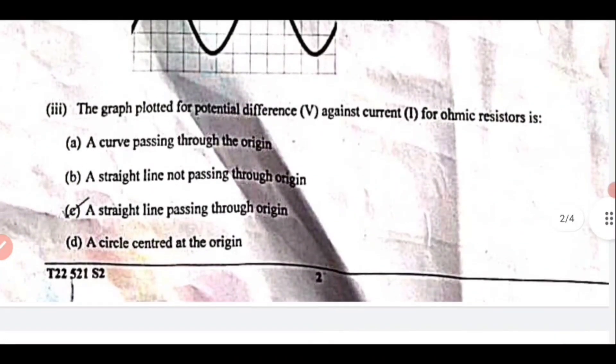Question 3: The graph plotted for potential difference V against current I for an ohmic resistor. The correct option here is option C: a straight line passes through the origin.